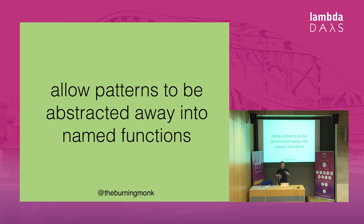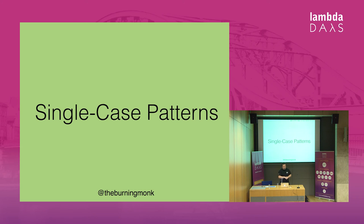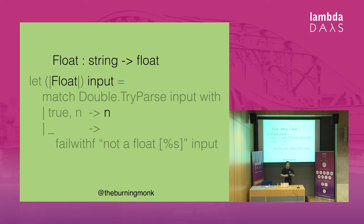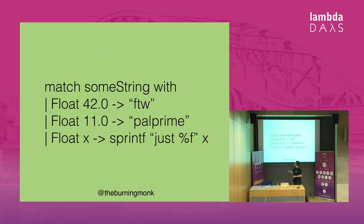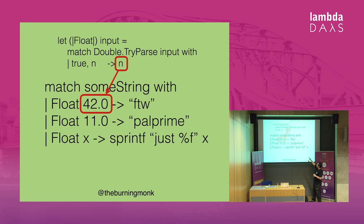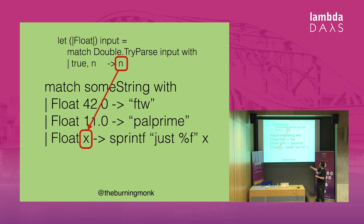For those not familiar with F#, here's a quick primer on active patterns. An active pattern is a feature that allows you to abstract patterns into named functions so you can easily reuse and compose them when doing pattern matching — three common types. A single-case pattern works similarly to a normal function except you put the pattern name in banana-clip operators. This is a pattern that takes a string as input and returns a float as output. When you do pattern matching, the thing you're matching becomes input to the pattern, and the output goes in a space where you can provide a literal value or bind it to a local variable.